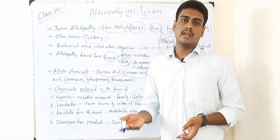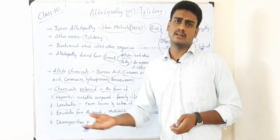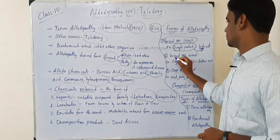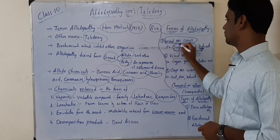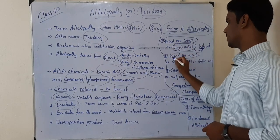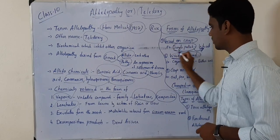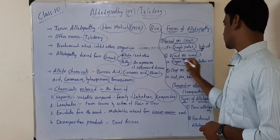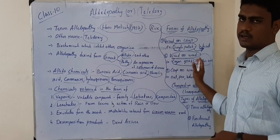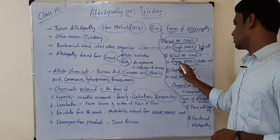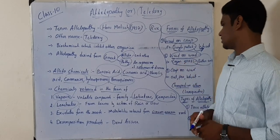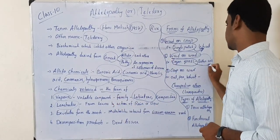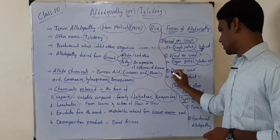The next form is weed on weed. The example is cogon grass and button weed — both are weeds, and cogon grass inhibits or kills button weed.